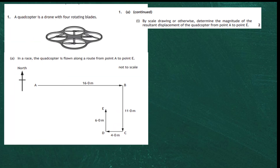Question 1 from section 2 of the 2019 National 5 Physics SQA exam. A quadcopter is a drone with four rotating blades. In a race, the quadcopter is flown along a route from point A to point E as shown in the diagram. The diagram is not to scale. For two marks, we are asked to do a scale drawing or otherwise determine the magnitude of the resultant displacement of the quadcopter from point A to point E.